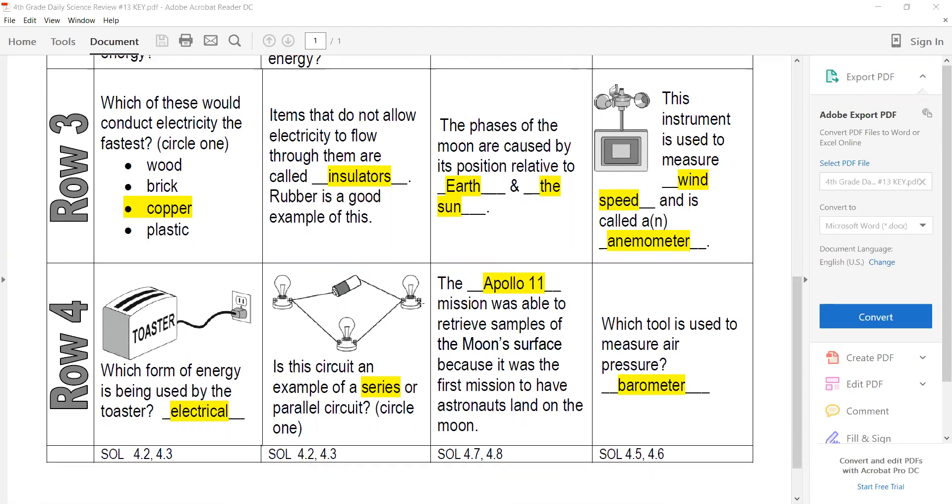This is a series circuit. A series circuit basically makes a shape like a circle, or more like a square or rectangle - it's one full circuit or shape. The Apollo 11 mission was sent to the moon to retrieve samples.